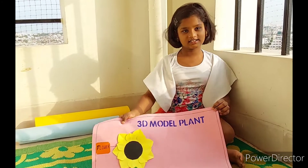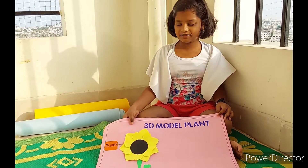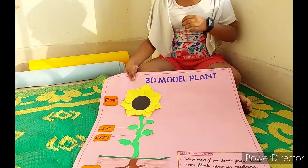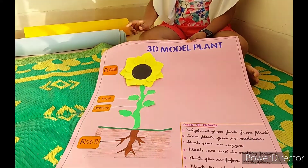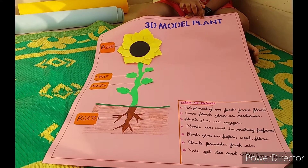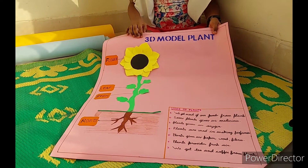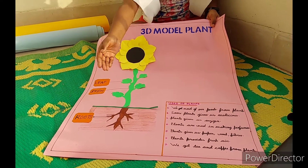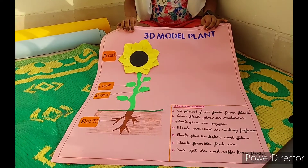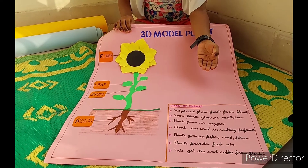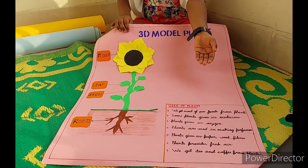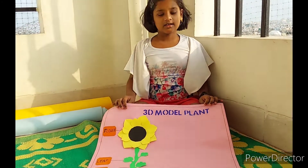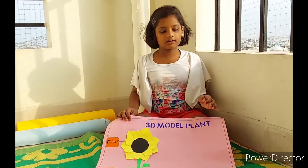This is also one of my projects. I have done it in the summer vacation and it's a 3D model of a plant. I made flower, leaf, stem and roots, and at the bottom I wrote the uses of plants. We all know the uses of plants, so I wrote it over there.